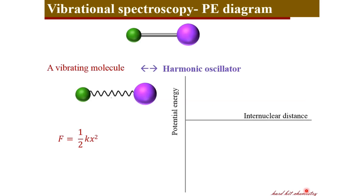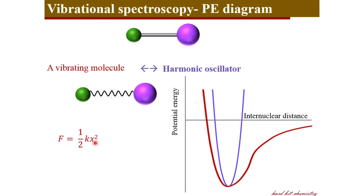Let's now have a look at the potential energy diagram of this harmonic oscillator. You get a perfect parabola because energies are described by a quadratic function. But we know that the molecular potential energy diagram is not a perfect parabola.